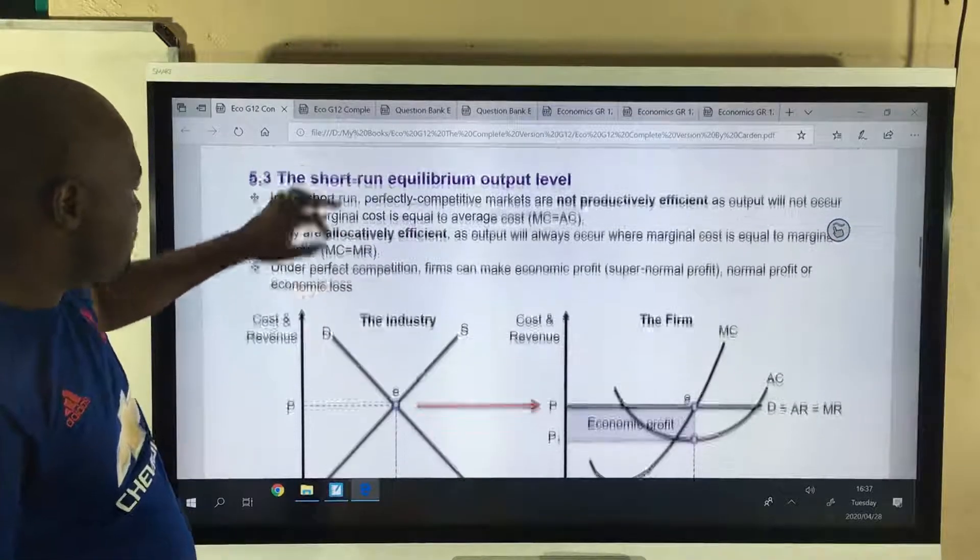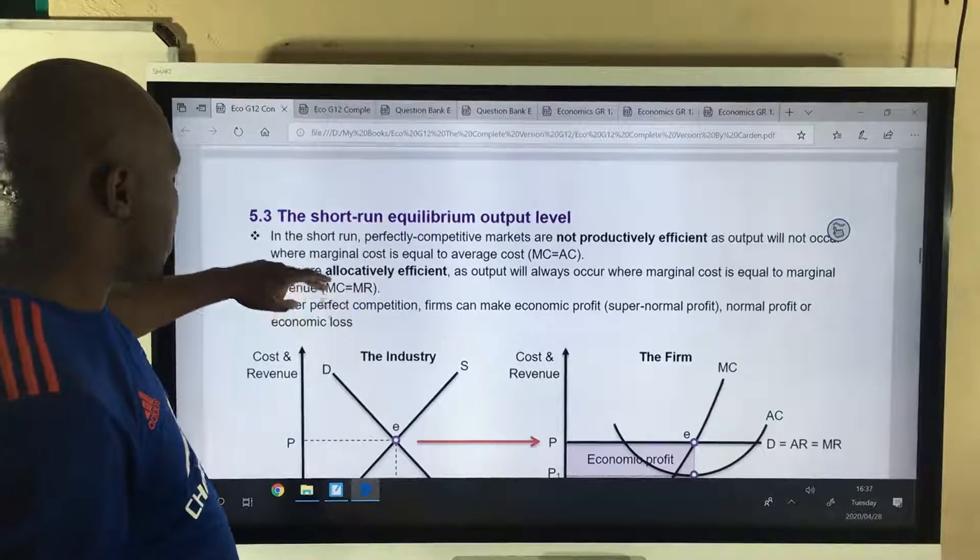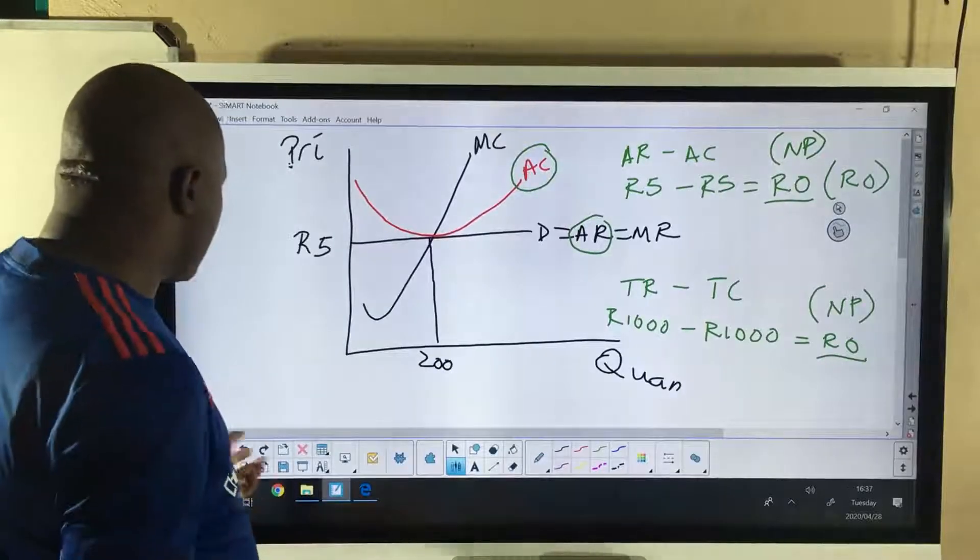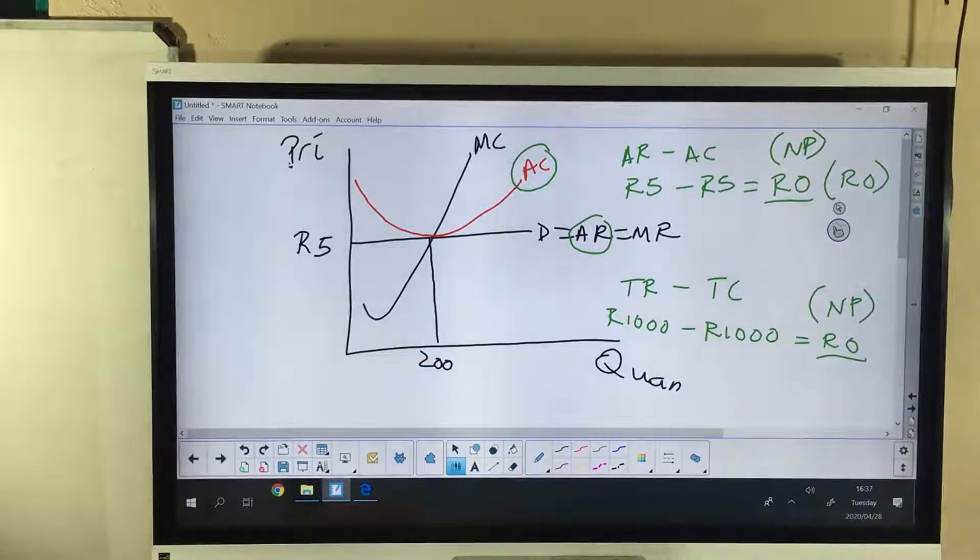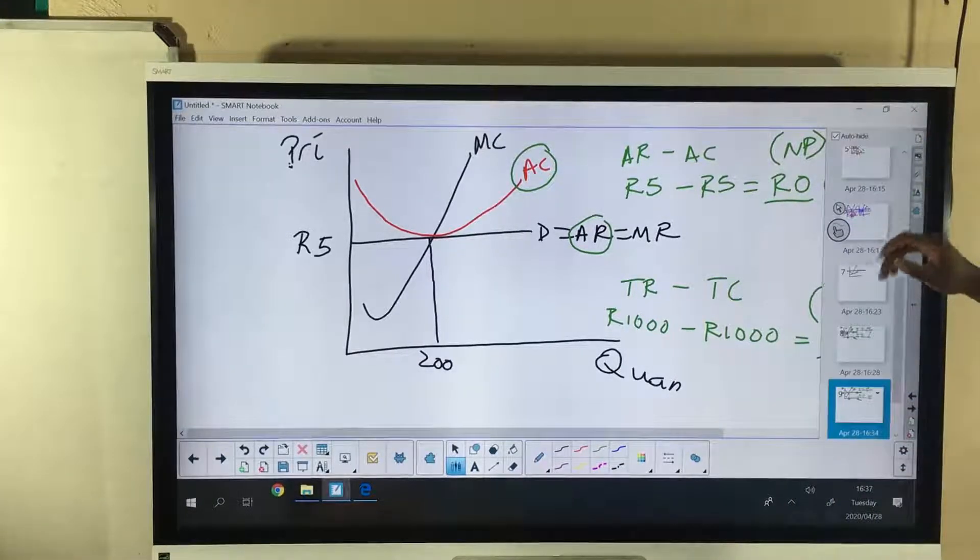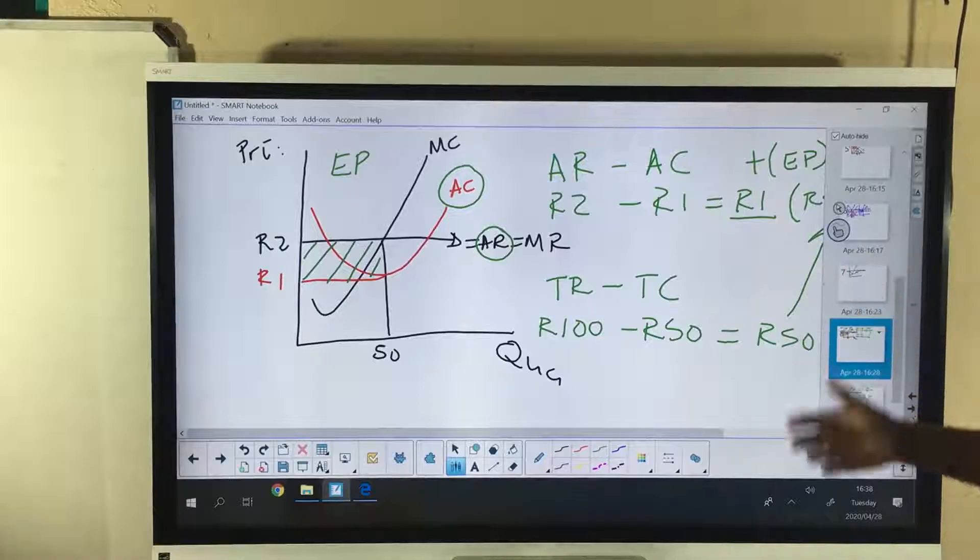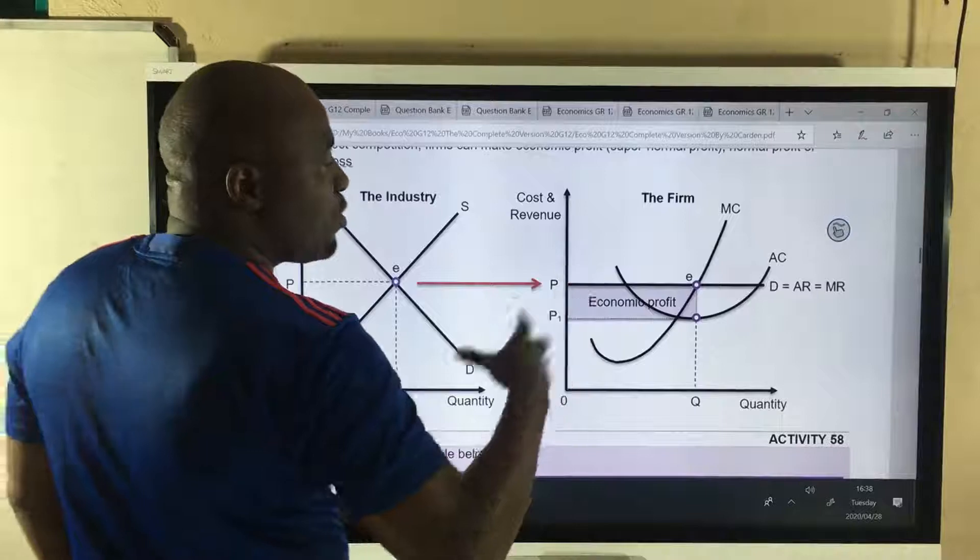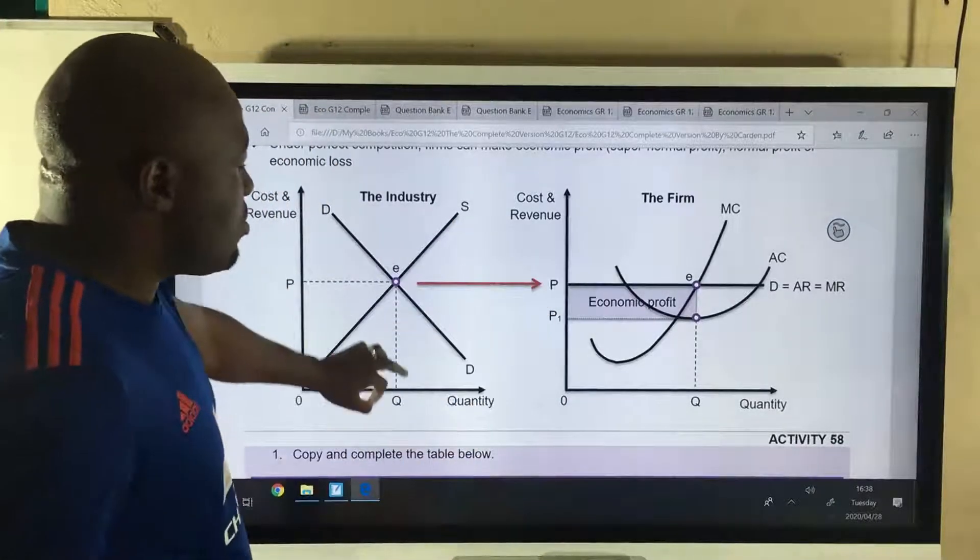But then here we are saying the short-run equilibrium position. For an individual, okay, in the short-run, yes, we have these two possibilities. In the short-run we have this as a possibility. And we also have this one as a possibility, economic profit. Then we have another possibility that we are going to explain in other lessons. Okay, so you see this one, I've drawn this before, I've explained it before. This is our industry, that's our individual, that's our economic profit.